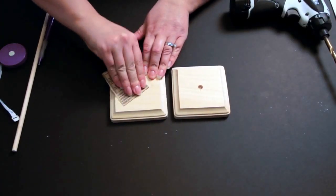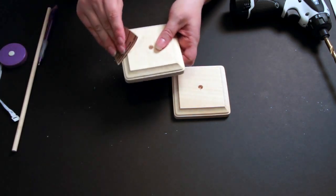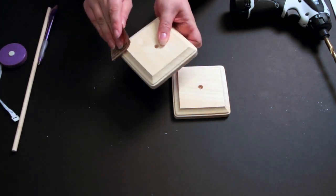After you've drilled your holes, you want to just lightly sand the pieces of wood. They're basically pre-sanded already, but there are a few rough edges.